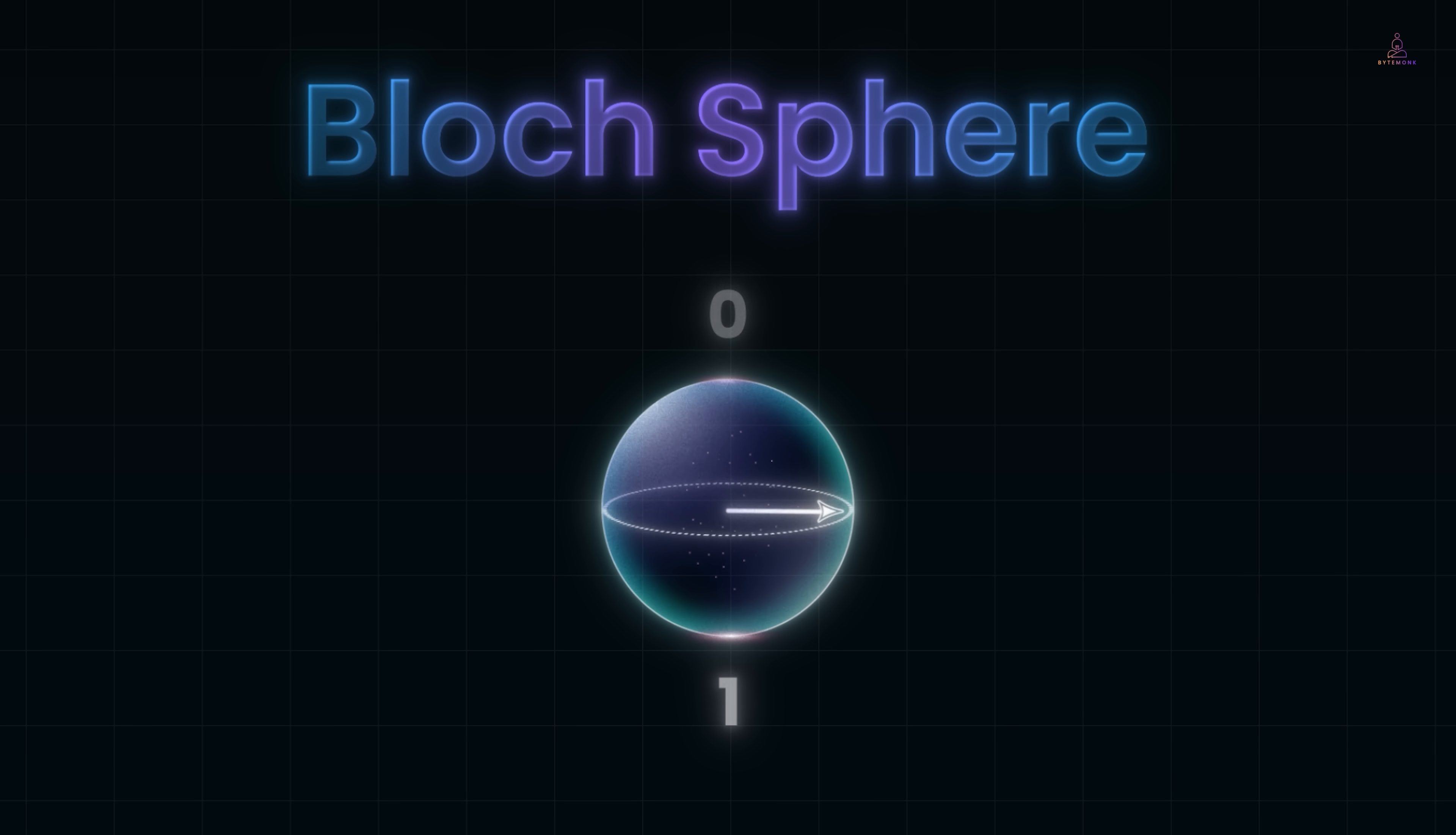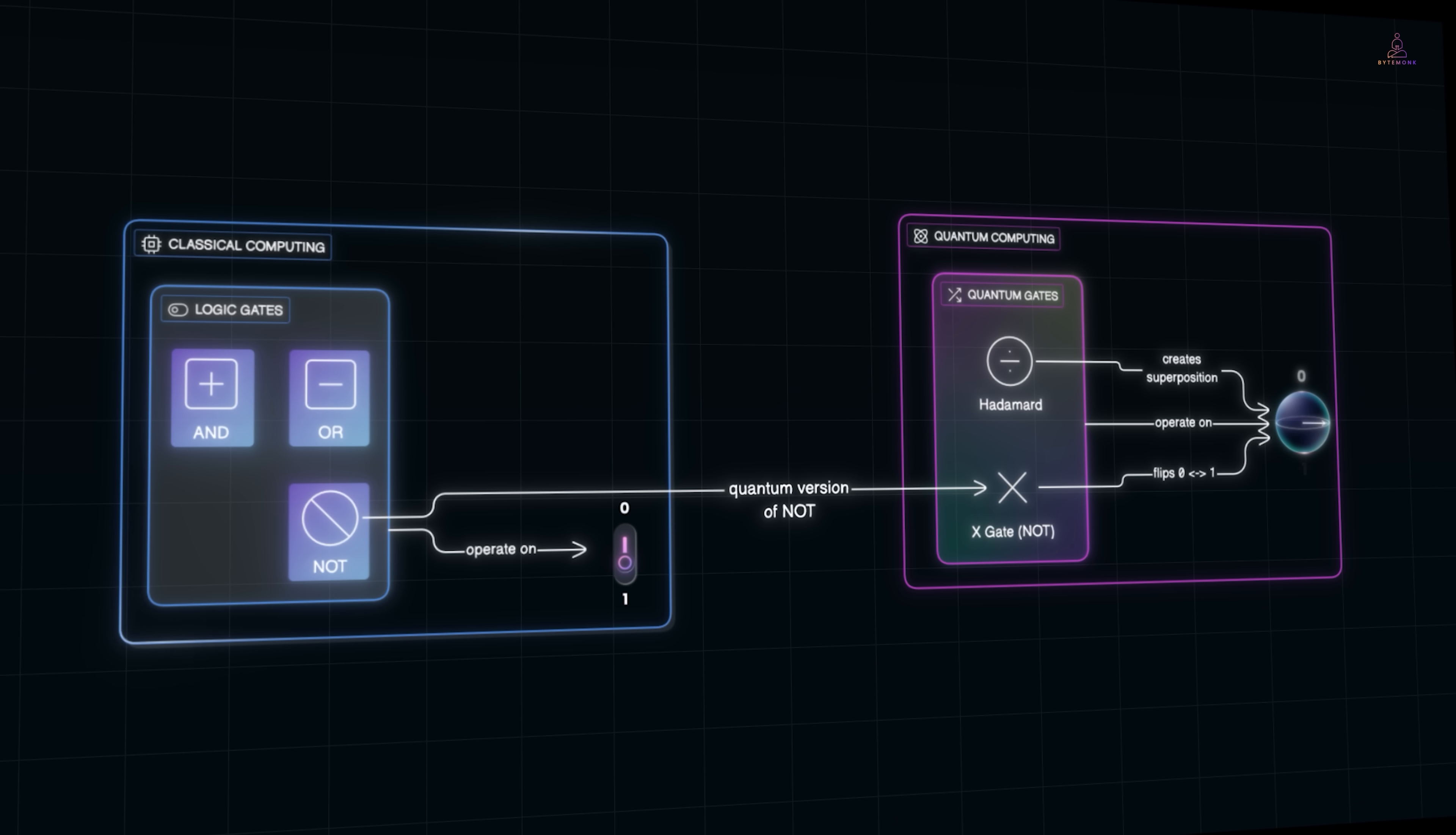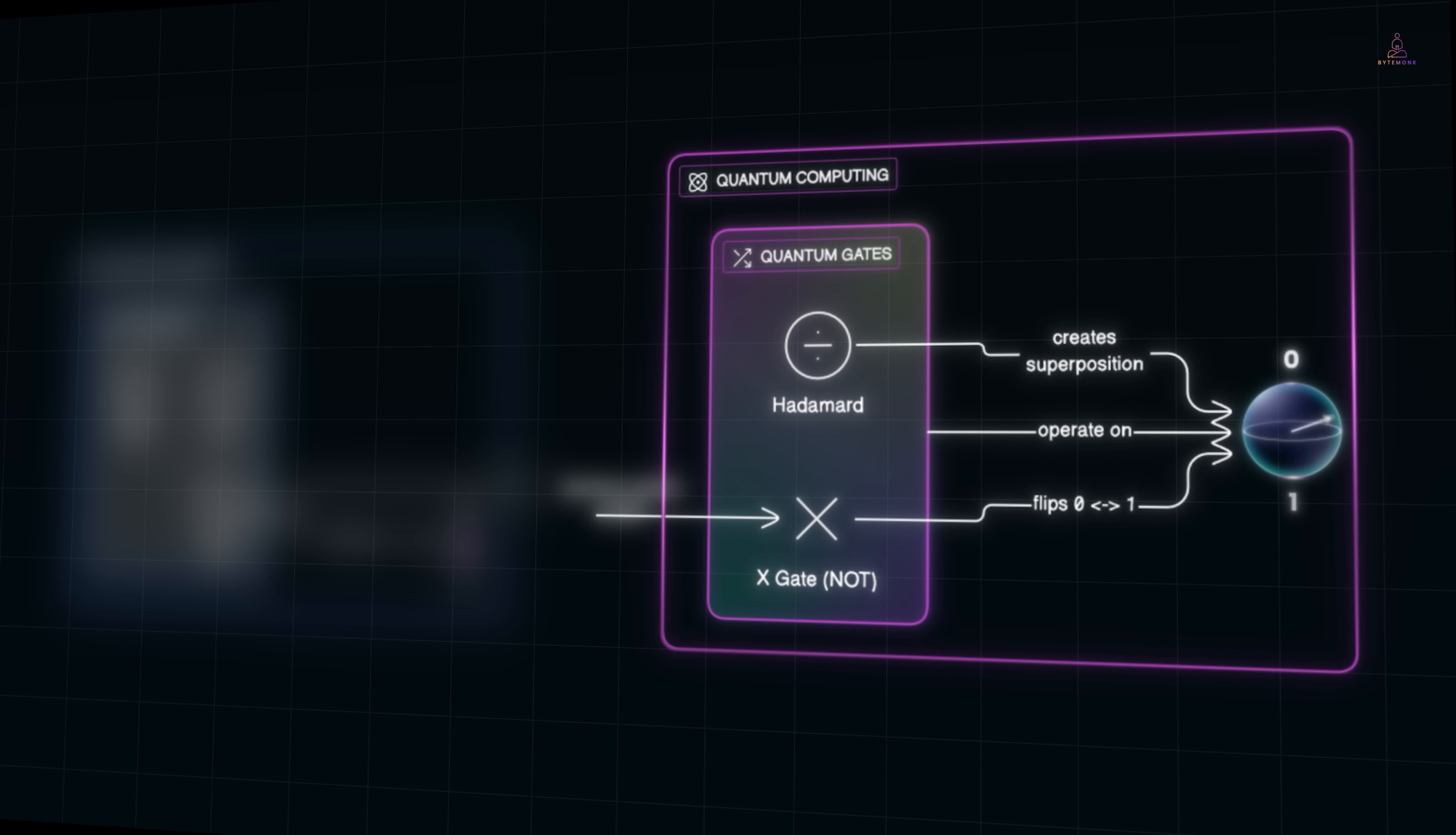Now to move the qubit around the globe, we use operations called quantum gates. If you think about classical computers, they're built from logic gates: AND, OR, NOT. These gates flip or combine bits to perform operations. Quantum computers work the same way in principle, but their gates act on qubits instead of classical bits. For example, the simplest quantum gate is the X gate, which is basically the quantum version of NOT. If the qubit is 0, it flips to 1. If it's 1, it flips to 0. Straightforward.